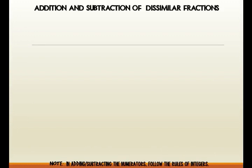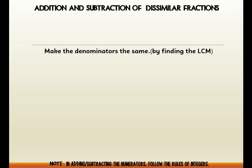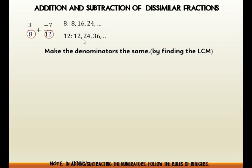Next is addition and subtraction of dissimilar fractions. First, make the denominators the same by finding the LCM, or least common multiple. Example: 3 over 8 plus negative 7 over 12. We have different denominators. We find the multiples of 8: 8, 16, 24, and so on. And for 12: 12, 24, 36, and so on. The least common multiple of 8 and 12 is 24, as it is the least number common among the multiples of both.